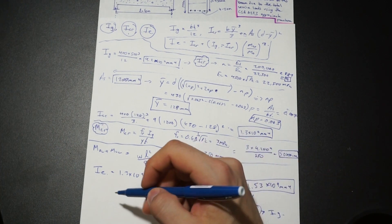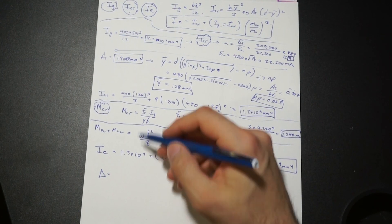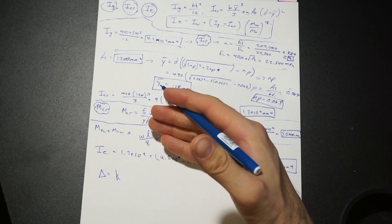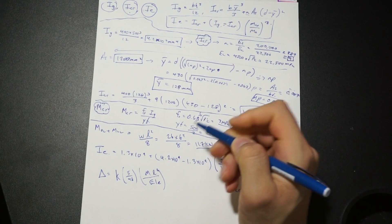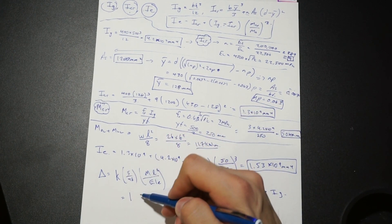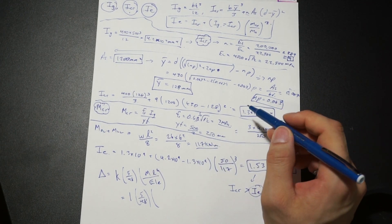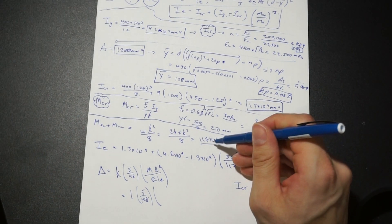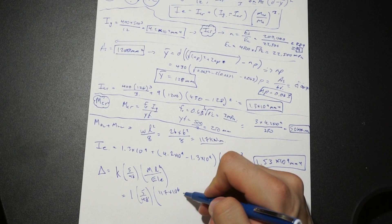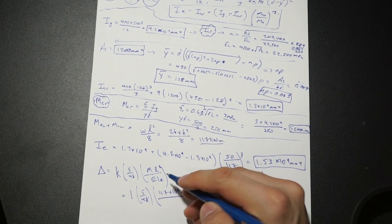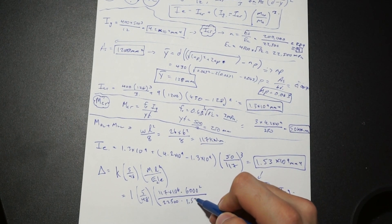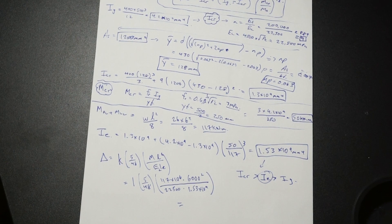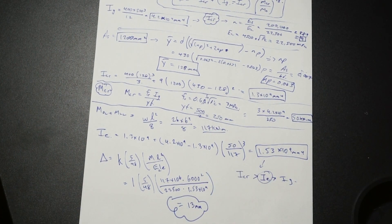Finally, we calculate our immediate total cracked deflection using the elastic deflection formula for a simply supported beam with the effective moment of inertia. K equals 1 for a simply supported beam. Maximum bending moment due to service loads is 117 kN·m. Converting to Newton and millimeters, L is 6,000 mm, EC is 22,500 MPa, and IE is 1.53 times 10 to the 9. We arrive at an instantaneous deflection of 13 mm due to service loads using the approximate Canadian procedure.